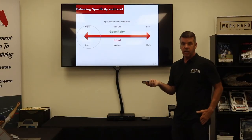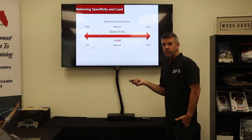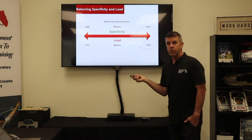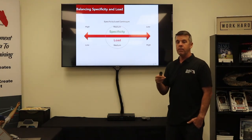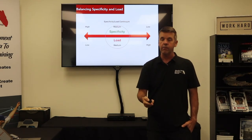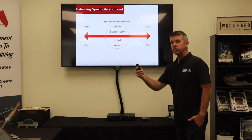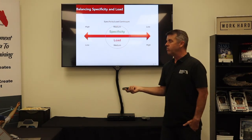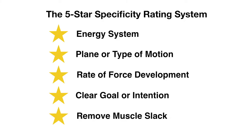You have some activities that are highly specific, not very loaded — that's your throwing program. You have some that are heavily loaded, not very specific — that's your strengthening program. And then you have some in the middle, which are medium specificity, medium load — we call that your power workout. What we have to do is integrate all those and individualize them based on your assessment, how you move, and what your individual needs are. And then we have to make sure they meet our five-star rating system for specificity for you as a baseball player.